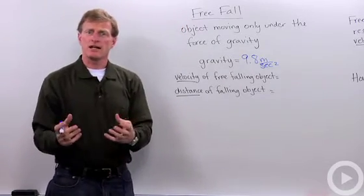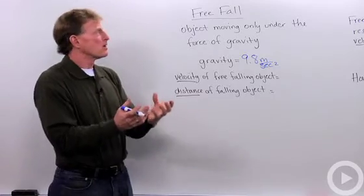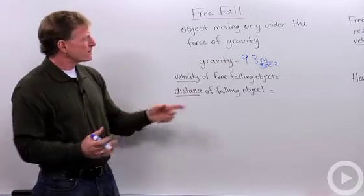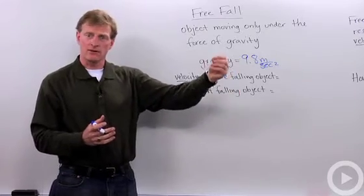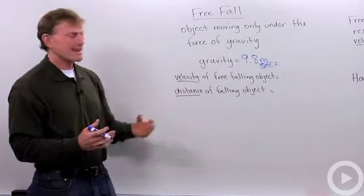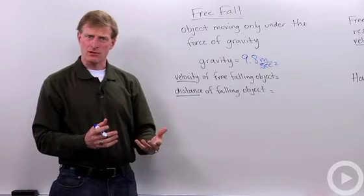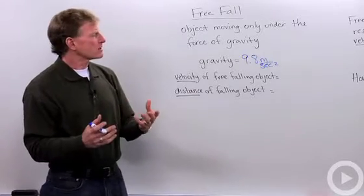Typically, in a physics class, you'll be asked to solve two types of equations calculating free fall. The first one is the velocity of an object at a certain point in time after it's dropped from rest. The second is the distance that it's fallen after it's been dropped. So we'll calculate those two.